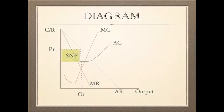This is the monopoly diagram, and as you can see they are operating at MC equals MR, the profit maximising output, and at this output they're making a supernormal profit. If you were trying to show a loss-making monopoly you would simply draw the AC curve much higher.